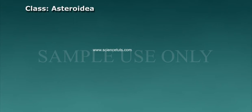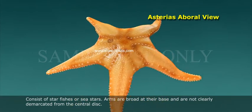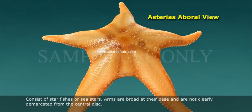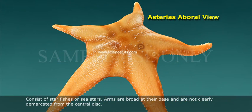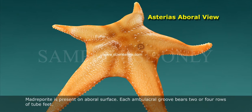Class Asteroidea consists of starfishes or sea stars. Arms are broad at their base and are not clearly demarcated from the central disc. Pedicellariae are two-jawed, pincer-like modified spines used in capturing small animals. Madreporite is present on the aboral surface, and each ambulacral groove bears two or four rows of tube feet.